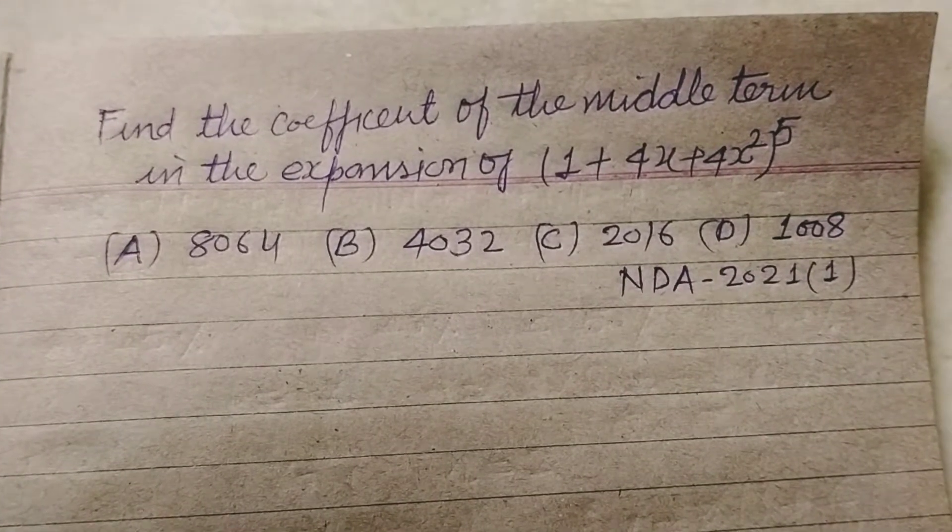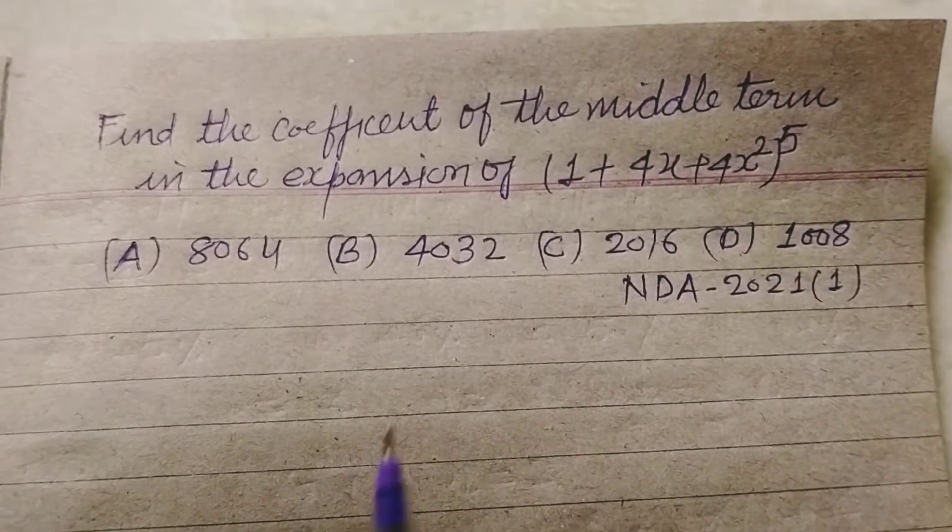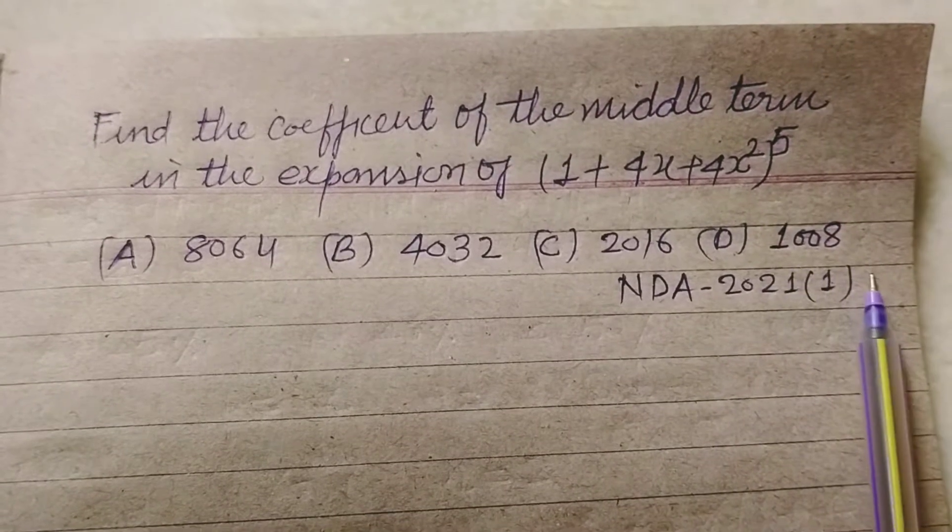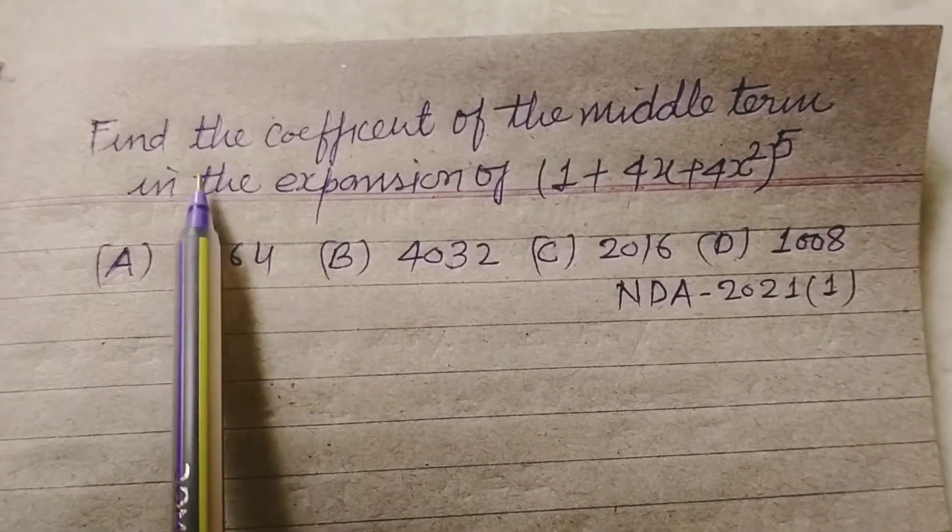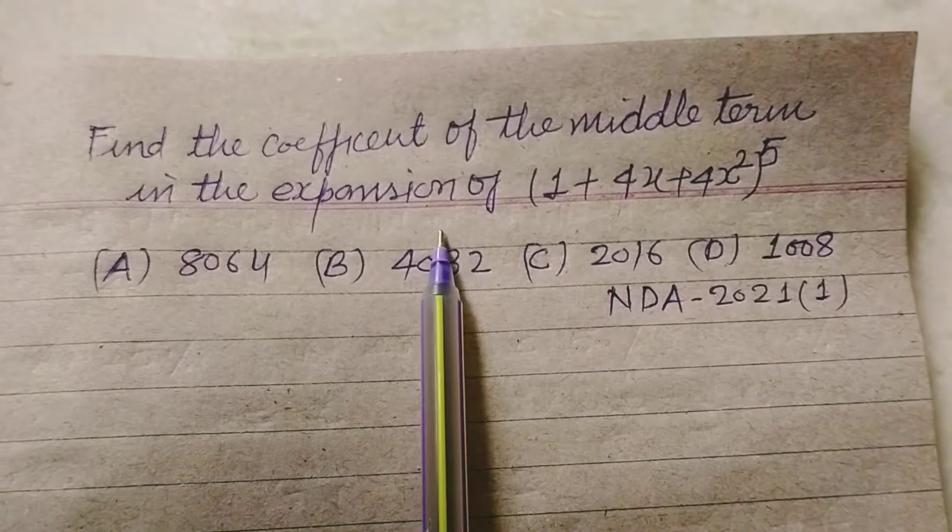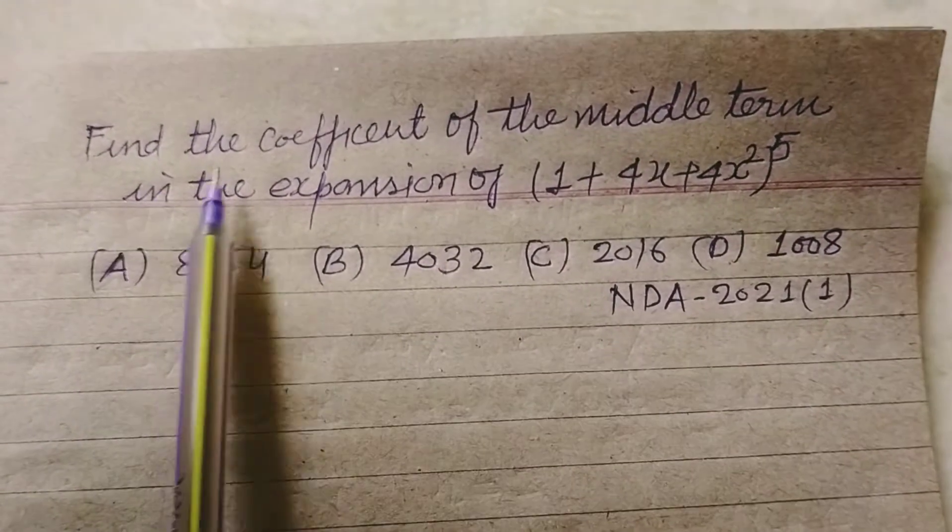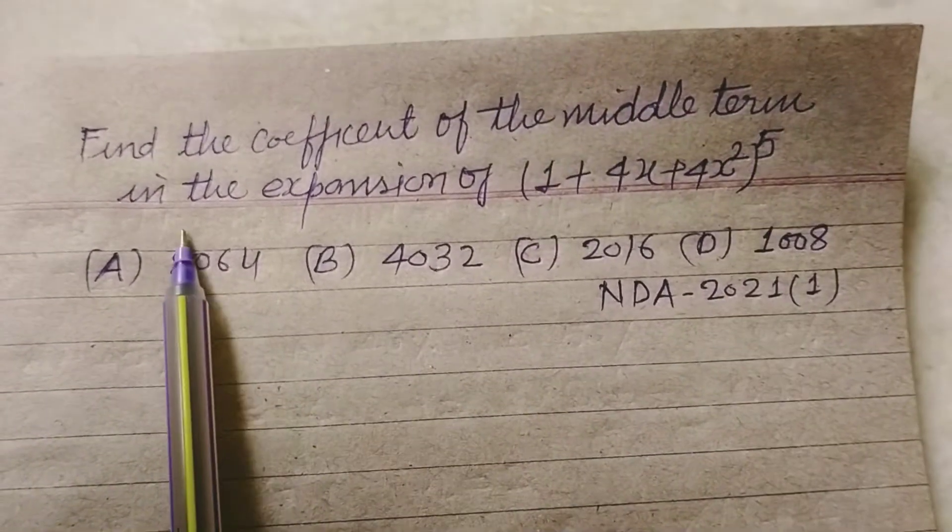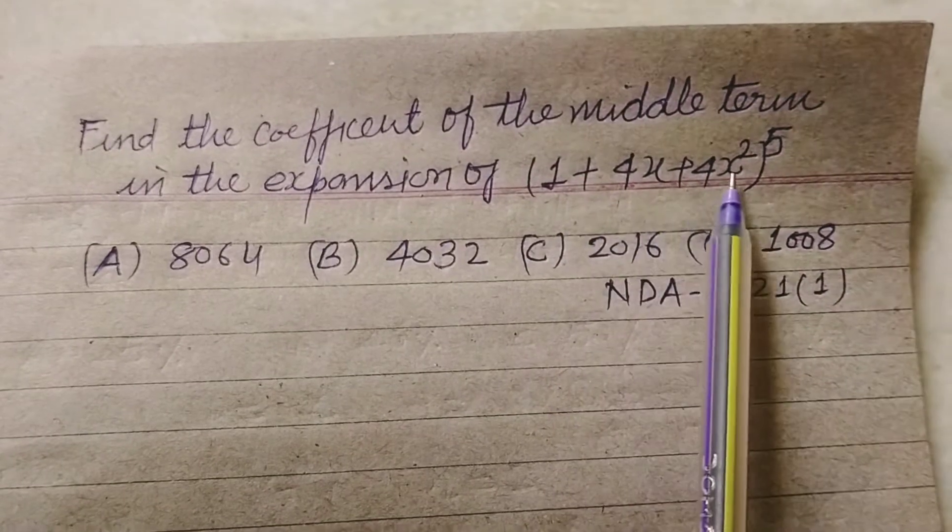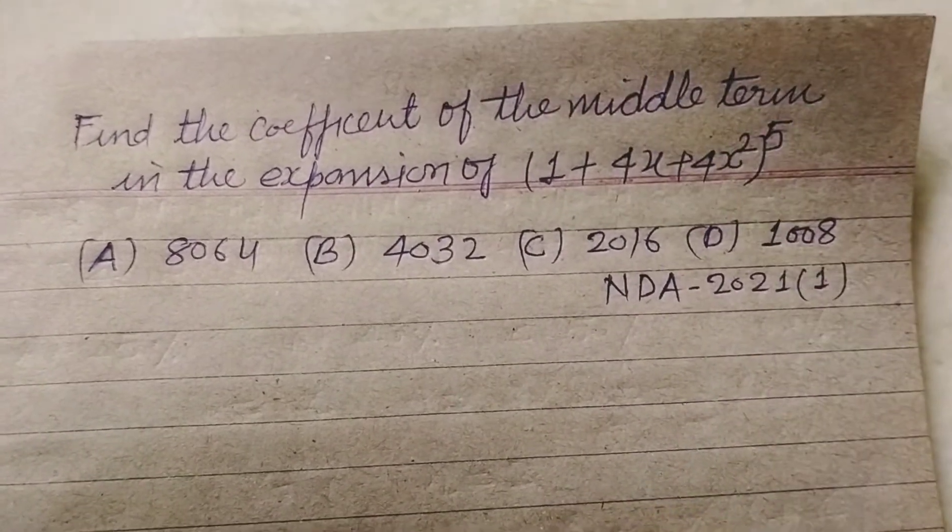Hello students and welcome to this YouTube channel. Here is a question from NDA 2021 first exam based on binomial theorem. The question is asking to find the coefficient of the middle term in the expansion of 1 plus 4x plus 4x square to the power 5.